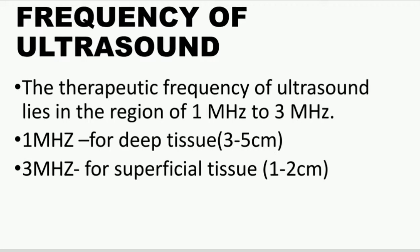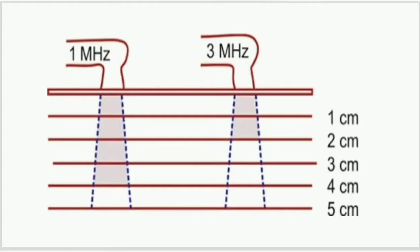The depth of penetration of ultrasound waves depends upon the frequency of ultrasound. Ultrasound waves having a frequency of 1 MHz are used for penetration of deep tissues, as they can penetrate up to 3 to 5 centimeters. Ultrasound waves of 3 MHz are used for treating superficial tissues, as they can penetrate only up to 1 to 2 centimeters.